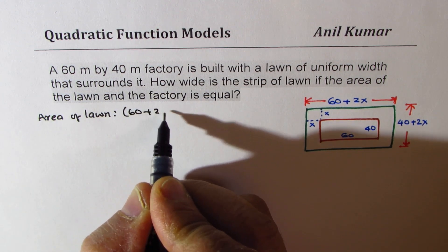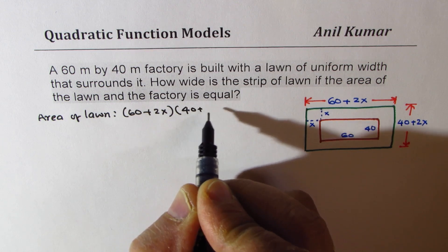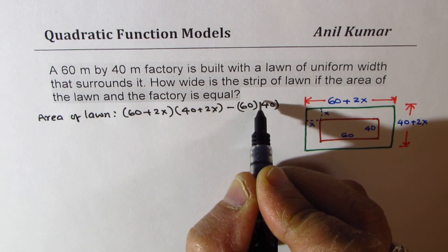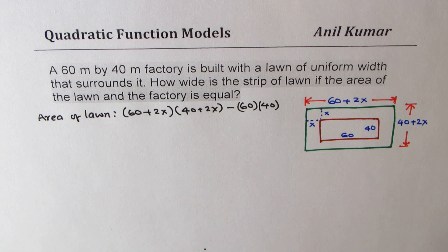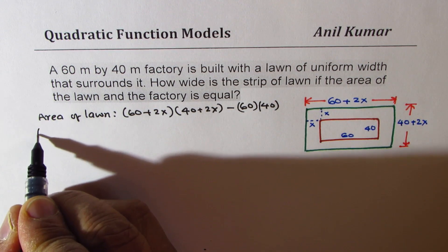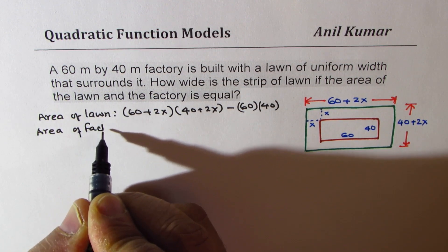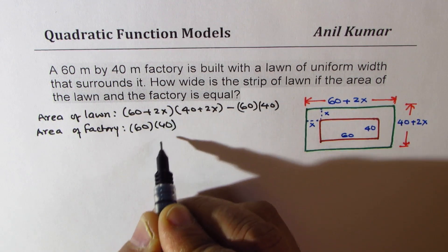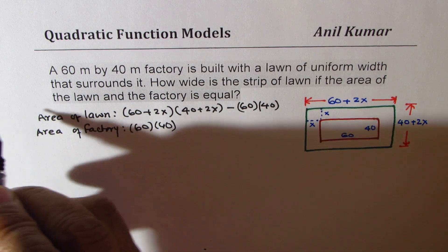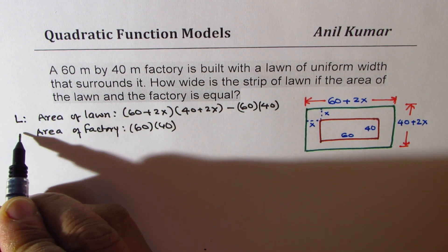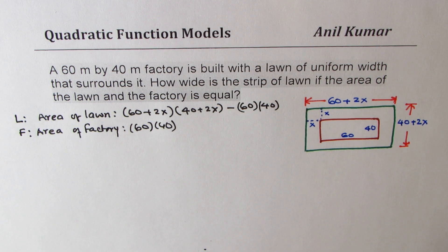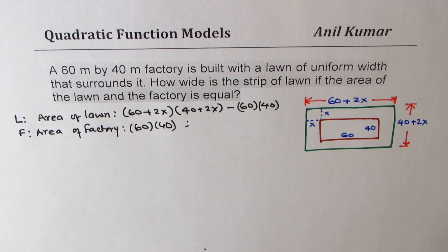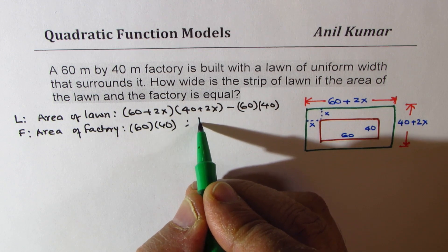That is to say (60 + 2x)(40 + 2x) minus 60 times 40. Let's call this capital L — that is the area of the lawn — and capital F for the area of the factory. Now the condition given to us is that these two areas are equal, so L equals F.